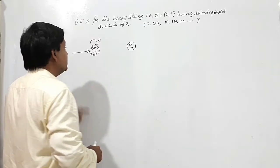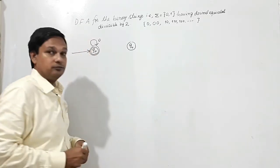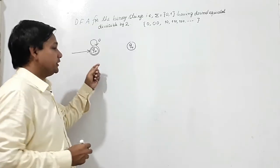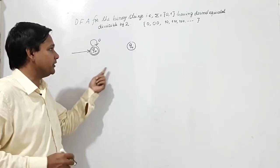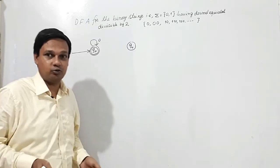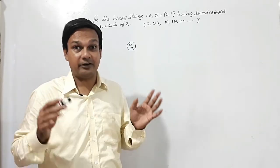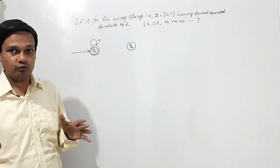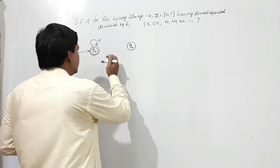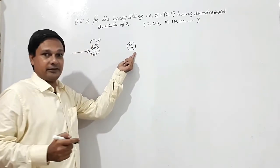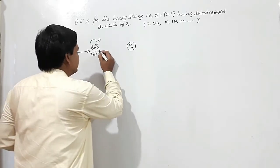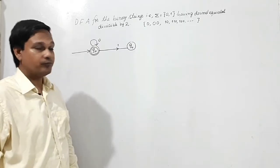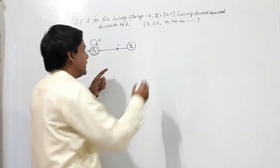Now I have shown the transition on input 0. For input 1: if I take the string '1', its decimal equivalent is 1. If I divide 1 by 2, the remainder is 1. So on input 1 from Q0, I make a transition to Q1.